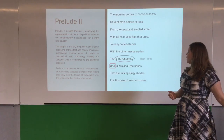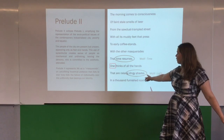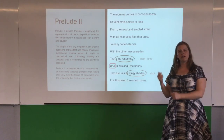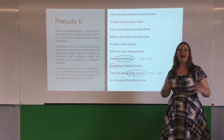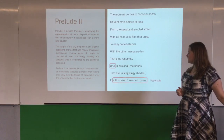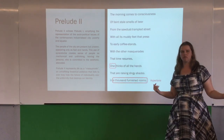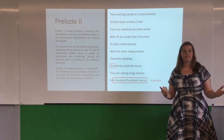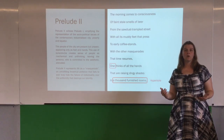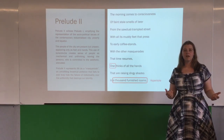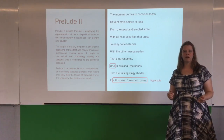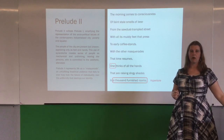The masquerade continues when we look at the motif of light in dingy shades — it's this idea of a curtain being raised on an act of meaningful life. We end with this hyperbole: a thousand furnished rooms. An idea that this meaningless existence is happening again and again. This idea of uniformity within the industrialised city is a factor of industry, so it's important we recognise this as a contextual element of the poem.